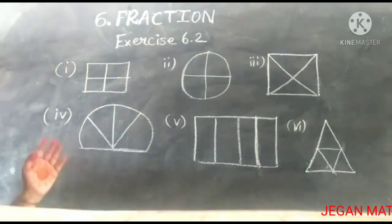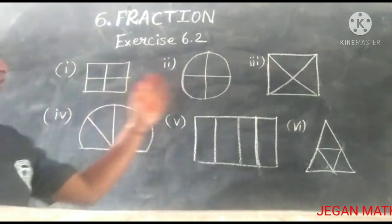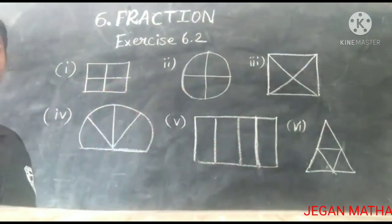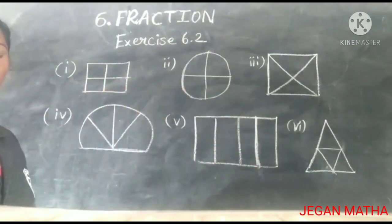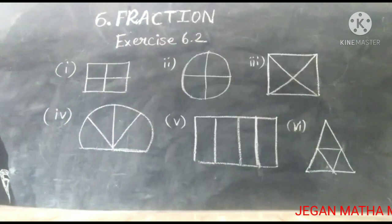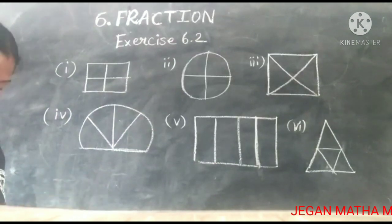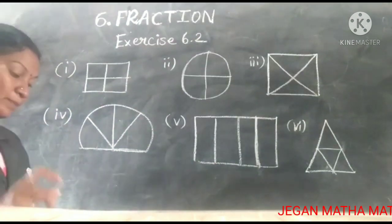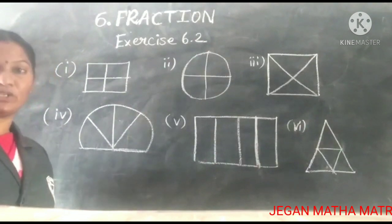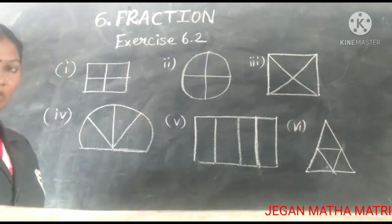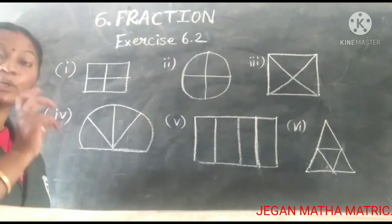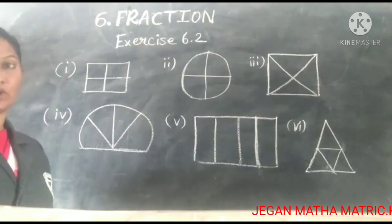You see some geometrical shapes are given and they are divided into 4 equal parts. Now you are going to shade the quarter portion in the following pictures. You are going to shade the quarter portion.